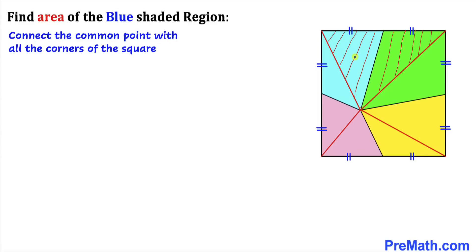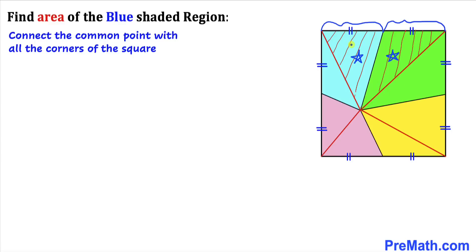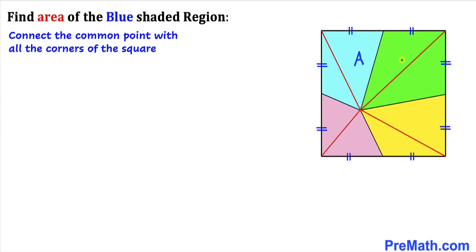Let's focus on these two shaded triangles. We can see that both of these triangles have the same base length, and moreover their height is the same as well. The height for this triangle is the same as the height for this green shaded triangle. Therefore we conclude that the area for both of these triangles is the same. If the area of this blue triangle is A, then the area of this green triangle is going to be A as well.